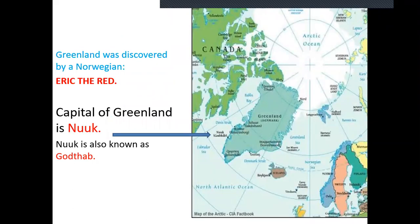Greenland was discovered by a Norwegian called Erik. When Erik was very small, his father migrated with the family from Norway to Iceland. When his father passed away, Erik migrated to Greenland, and through him the world came to know about Greenland. His hair and beard was red, so people called him Erik the Red.